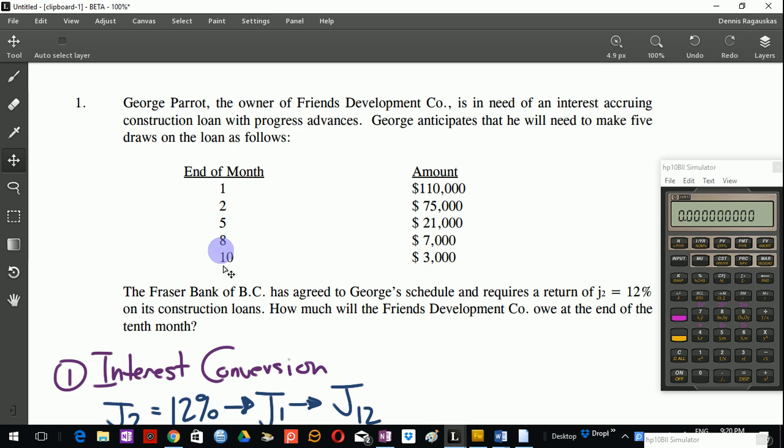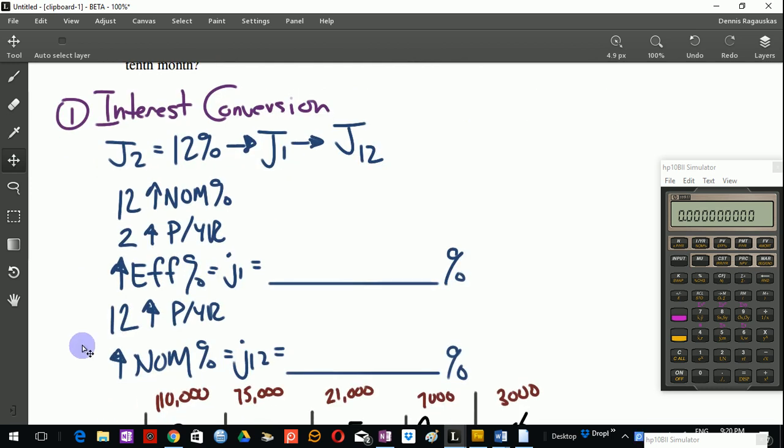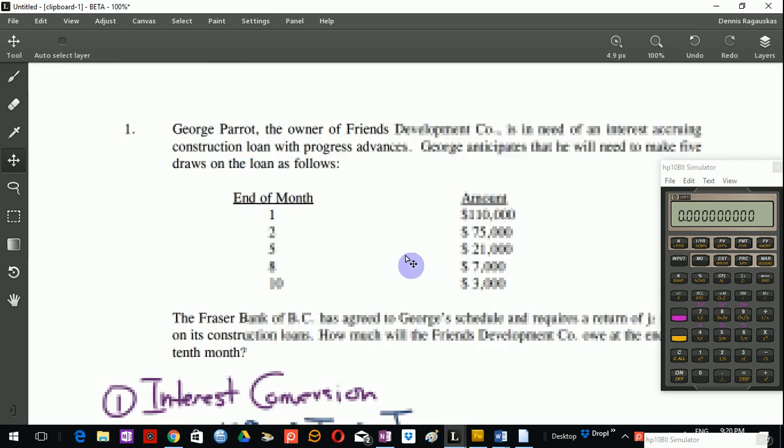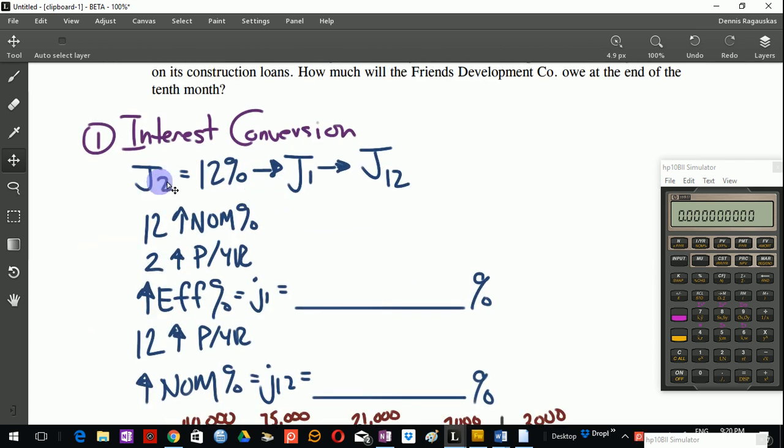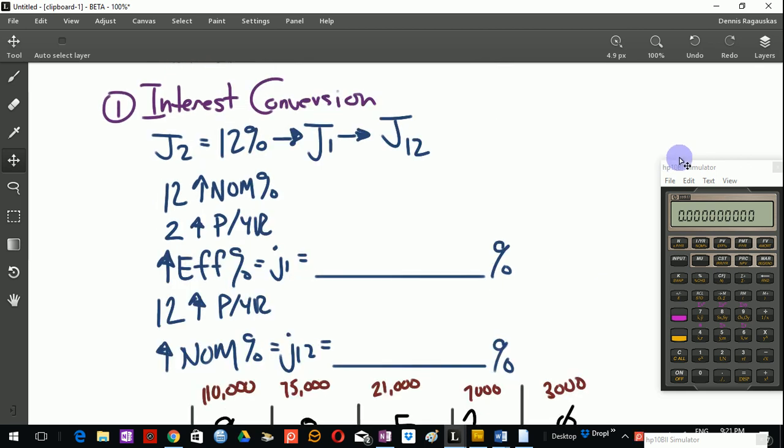So this is our draw schedule here. This is how much is advanced. So basically to solve this, you're going to have to calculate a bunch of future values to come up with the solution. So I've started the solution for this question already. Our first step is to convert J2 equals 12% to a J12 rate. We're dealing in monthly periods here. So you can't use a J2 rate for these terms here because it just won't work out. So we're going to convert J2 equals 12%. We're going to find the equivalent J12 rate. And then once we have that, we can go ahead and find our future values here for the various draws.